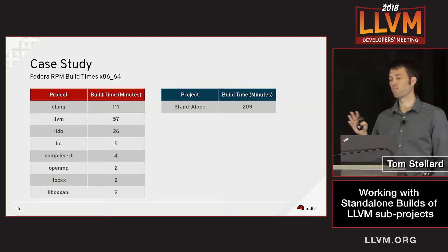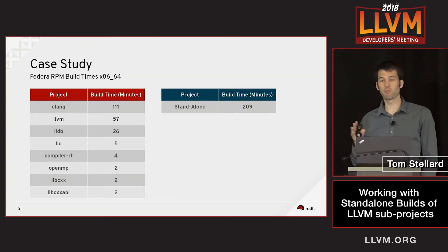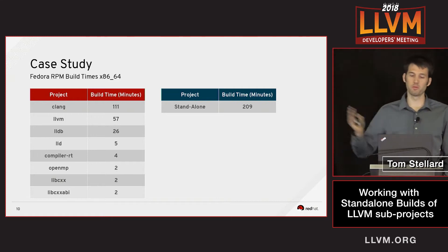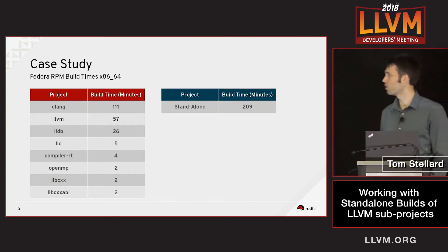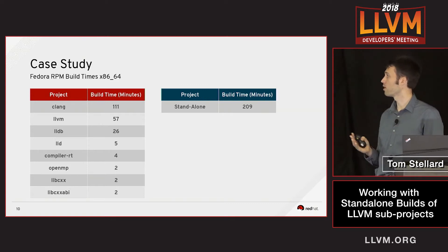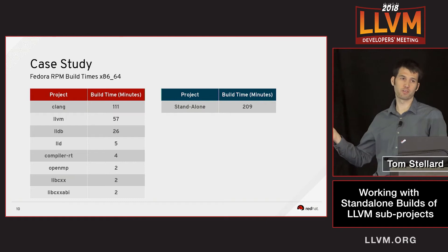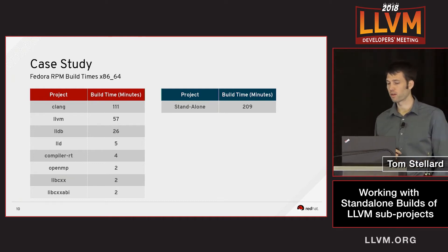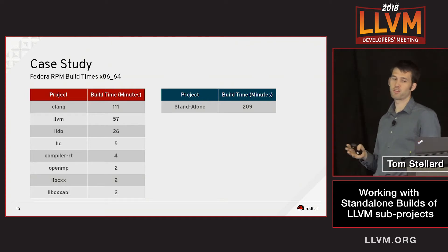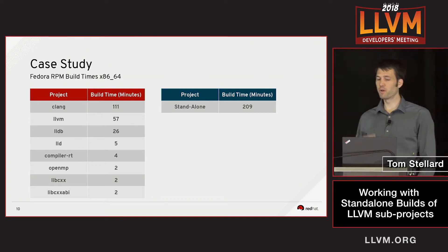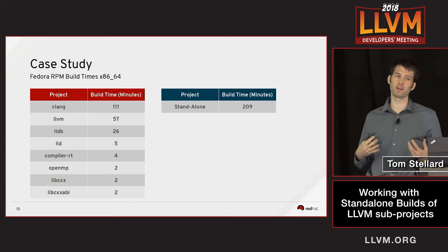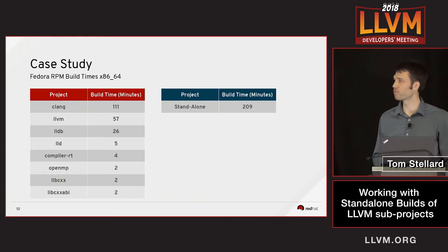For us, doing a quick unified rebuild isn't a major use case. We're really more concerned about getting a fix into a specific subproject, rebuilding just that subproject, and deploying it very quickly. For example, if we needed to fix LLD, it only takes five minutes — we don't have to wait 200 minutes to rebuild all the projects. Also, our build systems are limited to about 130 gigabytes of disk space, so if we tried to build everything together we'd actually run out of disk space. So standalone builds give us a way to fit within the existing build system.